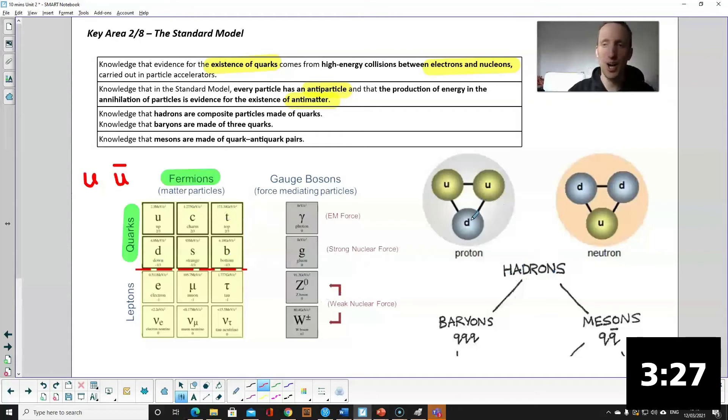We also have hadrons. Hadrons are particles made up of quarks. So like your proton and neutron hadrons are made of quarks and they're subdivided into baryons and mesons. Think of your syllables. Baryon, three syllables, that means it's made of three quarks.